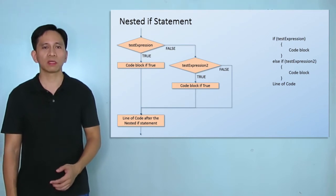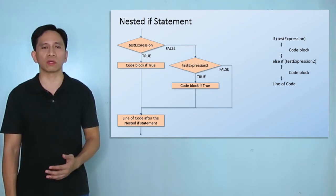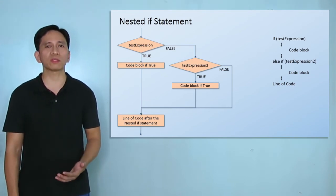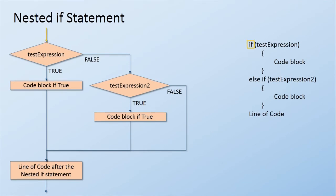The last is the nested if statement. Here, instead of just a single condition, you can add succeeding test conditions if the current test condition is false. It also begins with an if keyword, followed by a test expression. If the test expression is true, the succeeding code block in curly braces is executed, then the program proceeds to the line of code after the entire nested if statement. If the test expression is false, the program will then go on executing the succeeding code block in curly braces, then the program proceeds to the line of code after the entire nested if statement.